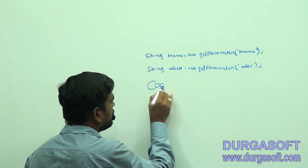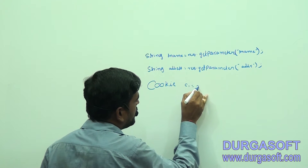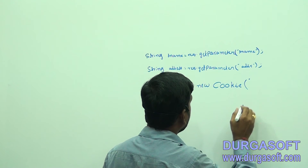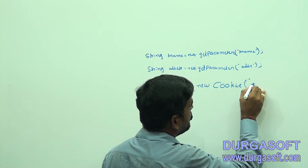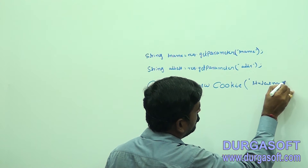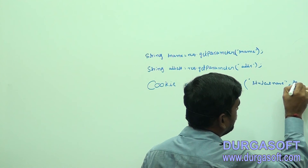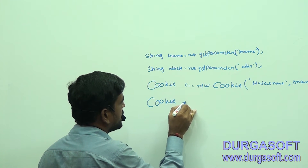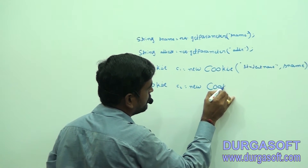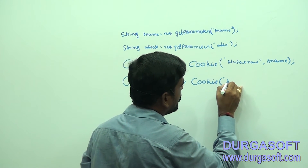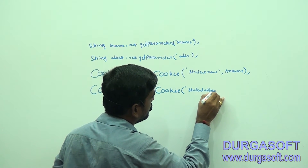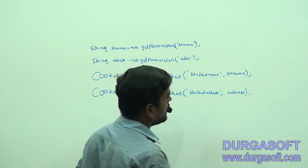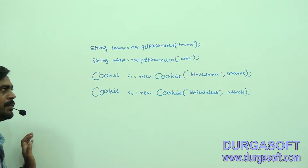We can create cookie objects like this: Cookie c1 = new Cookie("studentName", sName); and Cookie c2 = new Cookie("studentAddress", address). We take key-value pairs — student name and student address — and store those values into the cookie objects.